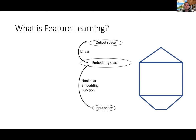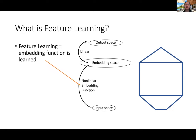Let me pin down what I mean by feature learning. A neural network can be thought of as a composition of two functions: one is the non-linear embedding function corresponding to the body of the network, and the other is a linear function from the embedding space to the output space — the last linear layer, usually called the head or readout layer. By feature learning I just mean that this embedding function is learned, and the coordinates of the embeddings are often called features.